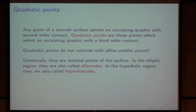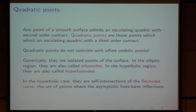Generically, quadratic points are isolated points of the surface. In the elliptic region, they are also called elliptic nodes. In the hyperbolic region, they are also called hyperbolic nodes — hyperbonodes. As Ronaldo told us in the last talk, in the hyperbolic case these are self-intersections of the flecnodal curve — the set of points where the asymptotic lines have inflections.